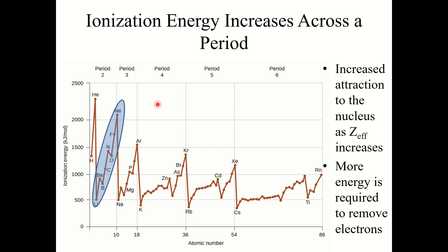Ionization energy increases across a period because, as you go across a period, atomic size decreases. When size decreases, those electrons are getting closer to the nucleus, which means more energy is required to remove them. The electrons feel a stronger attractive force to the protons, so it takes more energy to pull an electron away from the nucleus.